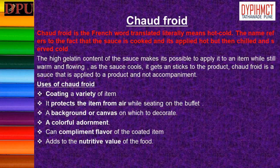Chaud-froid. Chaud-froid is the French word which literally means 'hot-cold.' The name refers to the fact that the sauce is cooked and applied hot on the food product, but then chilled and served cold. The high gelatin content of the sauce makes it possible to apply to a food item while still warm and flowing. As the sauce cools, it sticks to the product. Chaud-froid is a sauce applied to a product and is never served as an accompaniment or used to cook an item in, like other sauces.